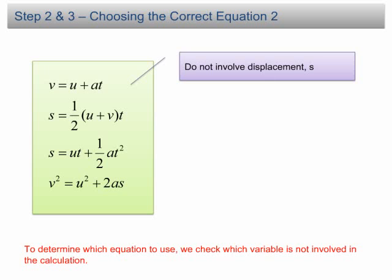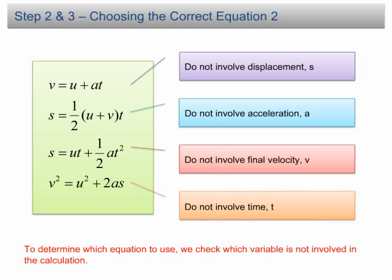For example, if displacement is not involved in the calculation, we use the first equation. If acceleration is not involved, we use the second equation and so on. In conclusion, we determine which equation to use from the quantity which is not given or not involved in the calculation.